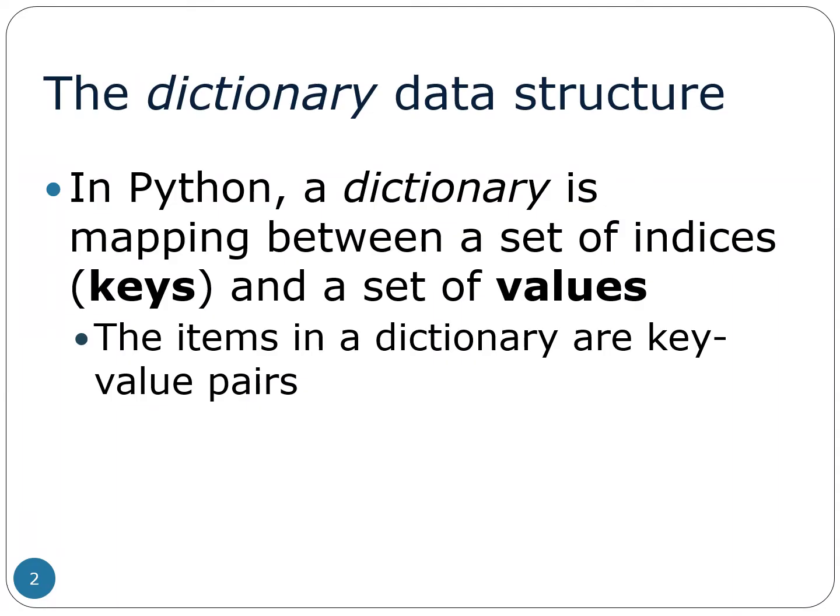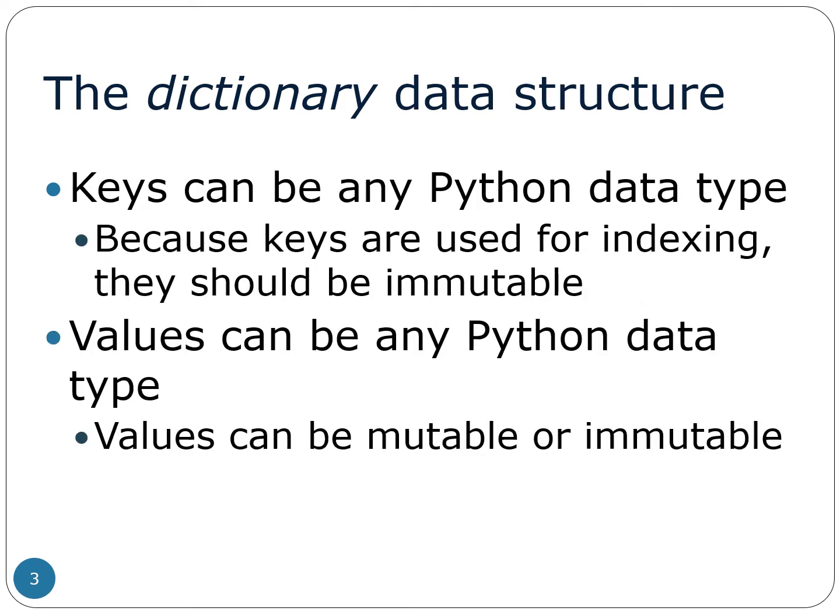A Python dictionary is a combination of two things: keys and values. Keys are the indices, and under a key we can specify one value or more than one value. Python dictionary is heterogeneous — heterogeneous means under a dictionary you can store multiple types of values. Under a key you can store multiple types, which can be any data type.